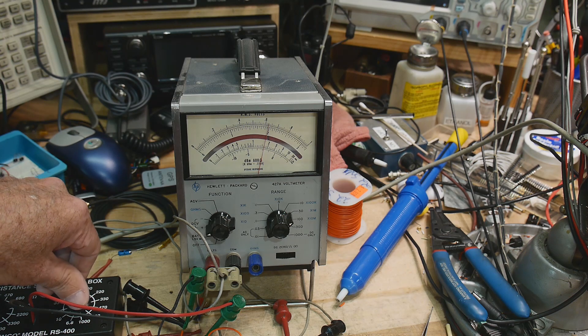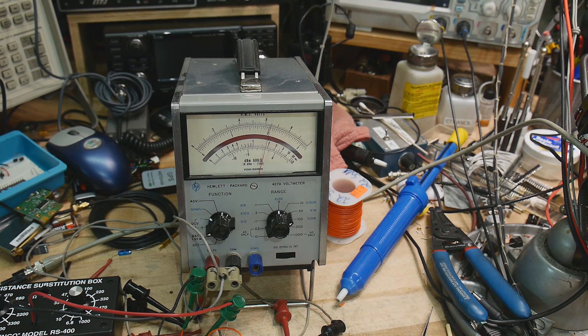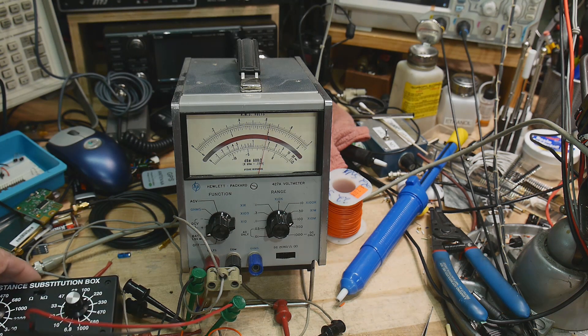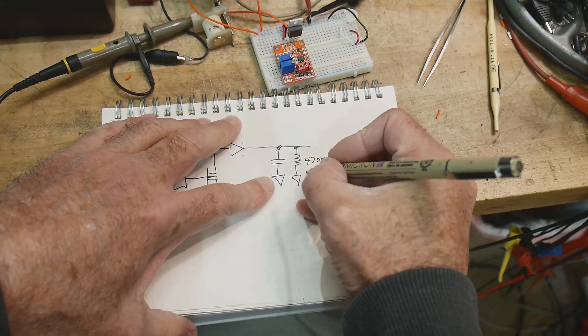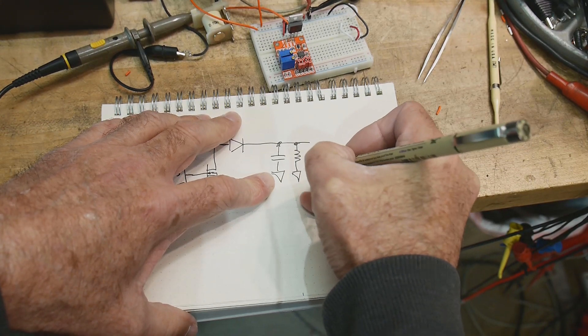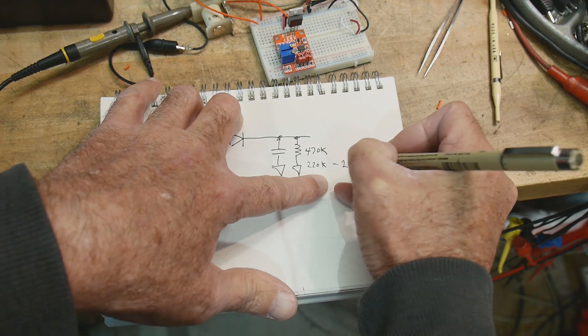So we can get about 20, let me go back, not too much. Go back here, so we're getting about 20 volts out with a 220k ohm load. So we've adjusted this to 220k, and this is giving us out 20 volts.